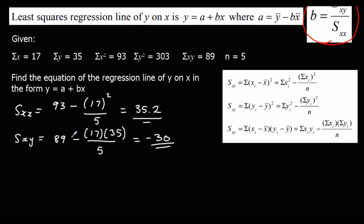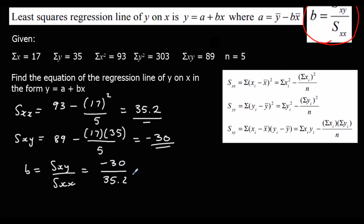So b, which is Sxy over Sxx, is negative 30 over 35.2. As a fraction that's negative 75 over 88, or to 3 significant figures: negative 0.852. We'll keep that number because we're going to use it again.